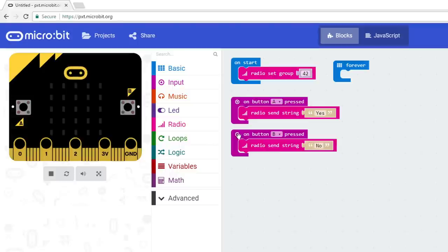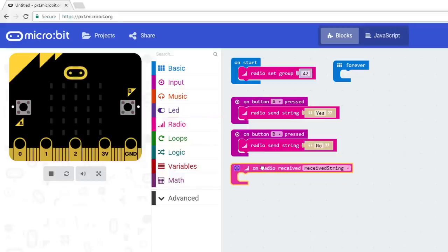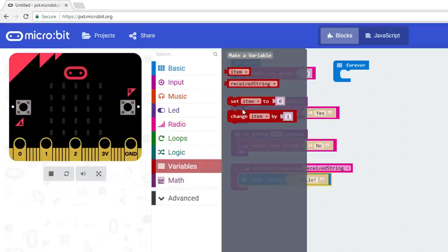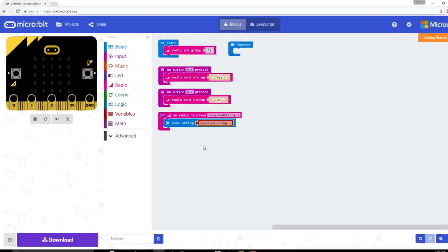From radio, drag OnRadioReceived received string to your program. Drag a Show String block from Basic and snap it into the OnRadioReceived block. Grab a Received String variable from Variables and snap it into the Show String, replacing the default Hello. This section of code says that whenever we receive a message from another microbit in the same radio group as us, we should scroll it across our LED array.